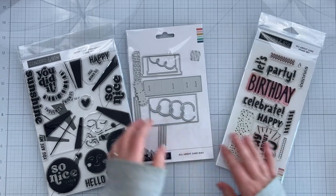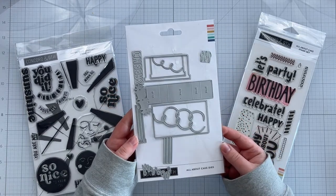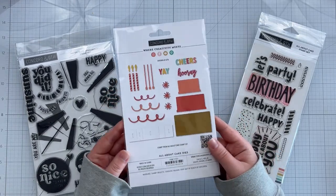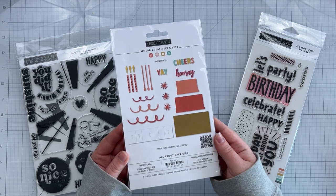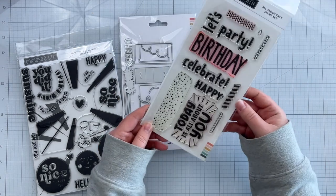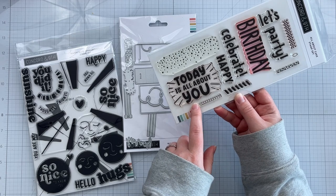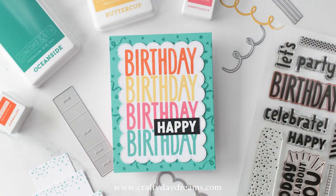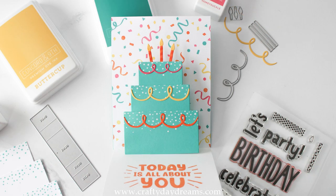I thought that this would pair really well with the All About Cake bundle. This was released a couple months ago and it's so cute. You can make a little cake that pops up in your card and there are perfect sentiments to go along with it. I recently used this bundle with the celebrations turnabout a couple months ago and that card is posted on my blog which I will link below.